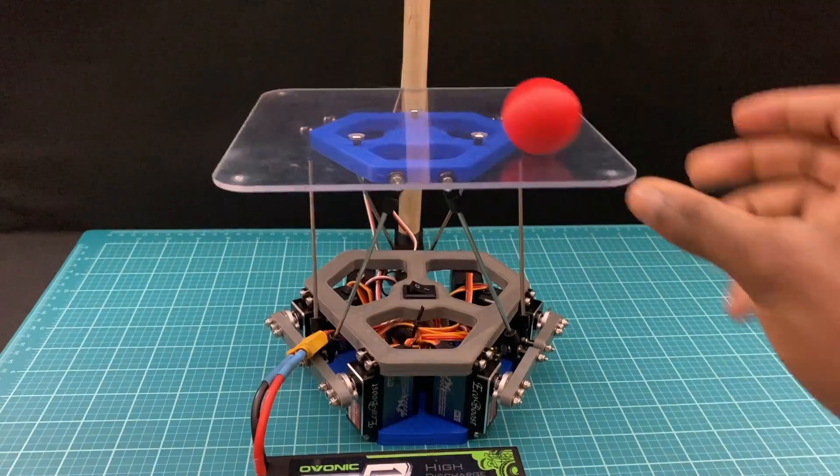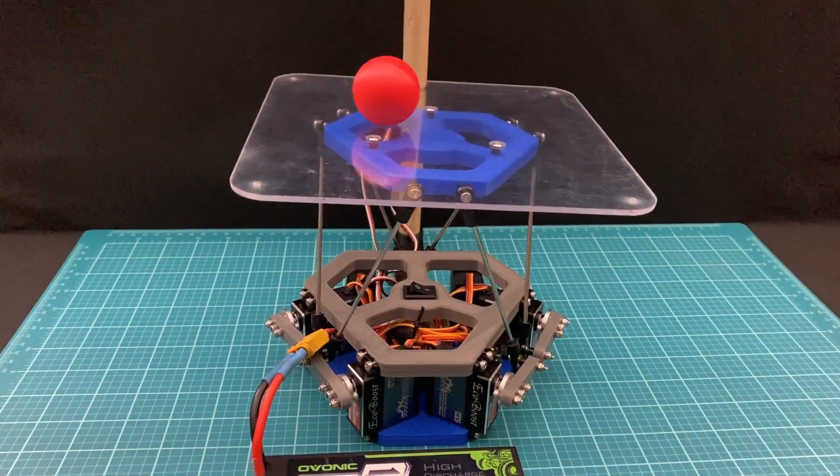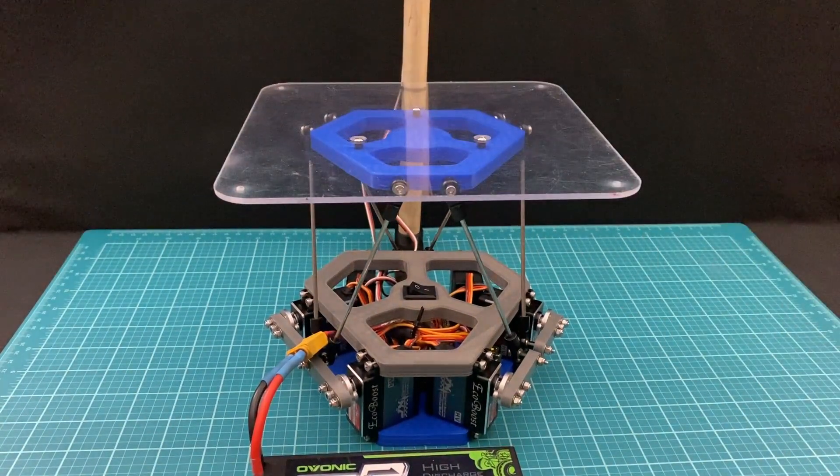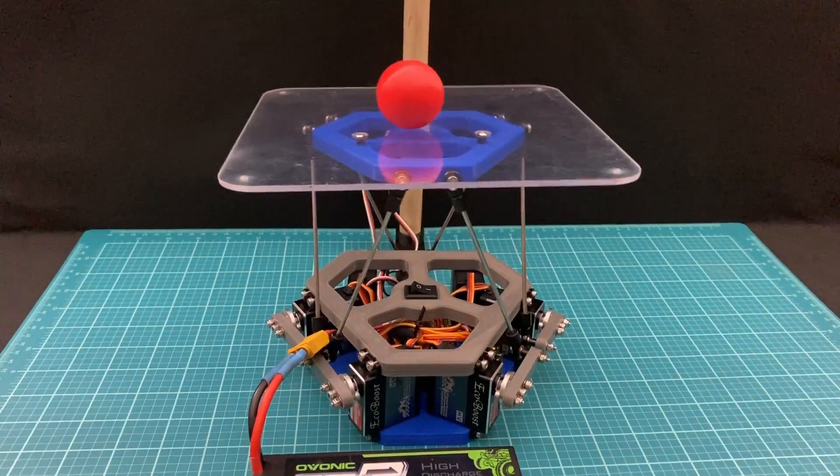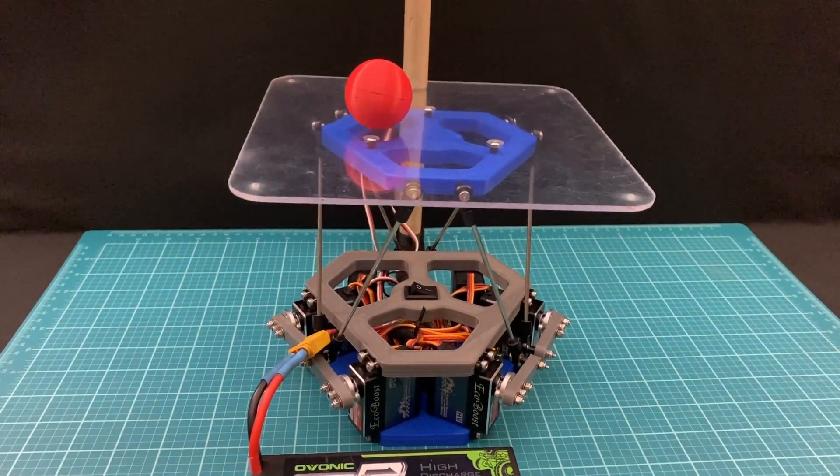When the PD algorithm is tuned properly, and kp and kd are at appropriate levels, we get this. The robot is able to effectively balance the ball without an excessive amount of swaying.